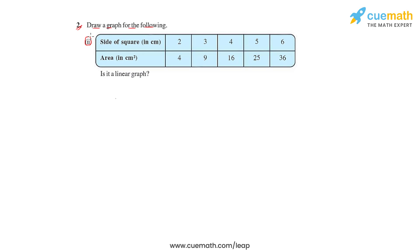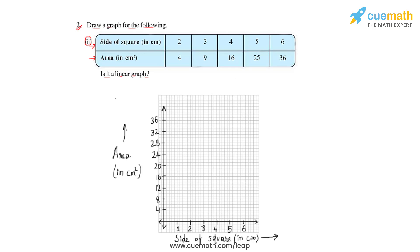In the second part, we have been given the side of the square and its respective area, and we will again have to conclude whether it is a linear graph. Let us consider the graphical sheet where we have taken the side of the square on the x-axis in centimeters and the area in centimeter squares on the y-axis. Let us now plot these points.